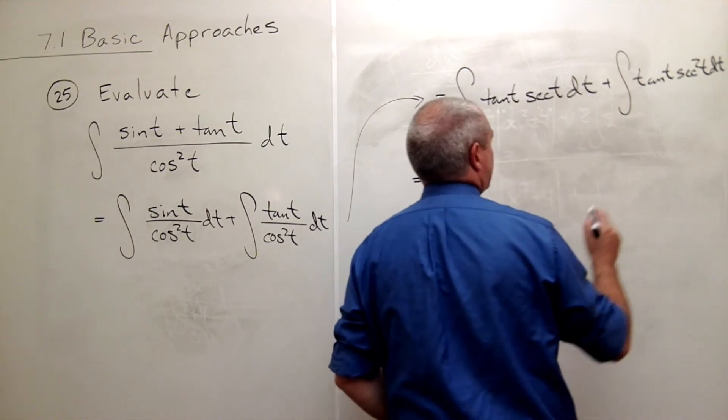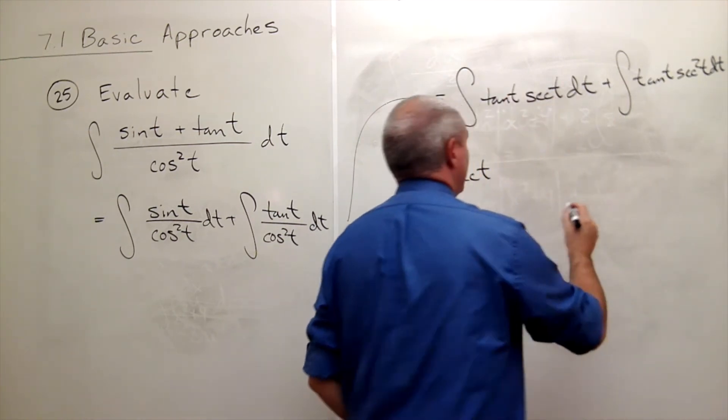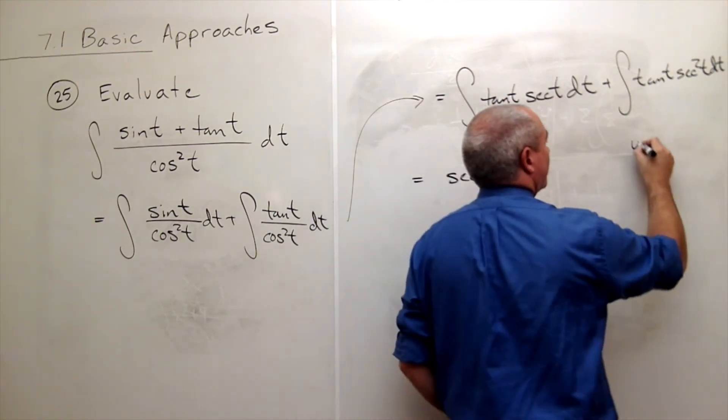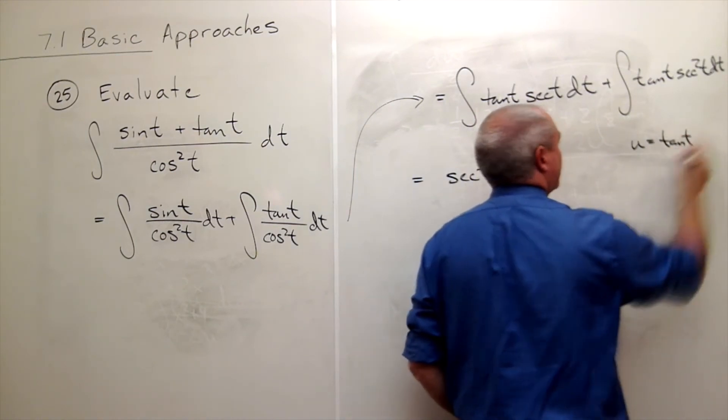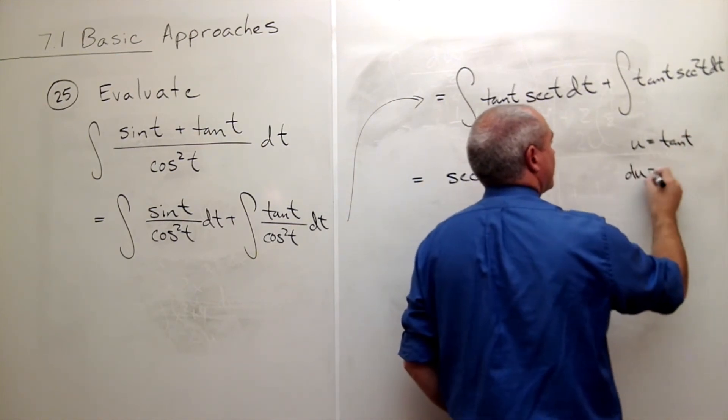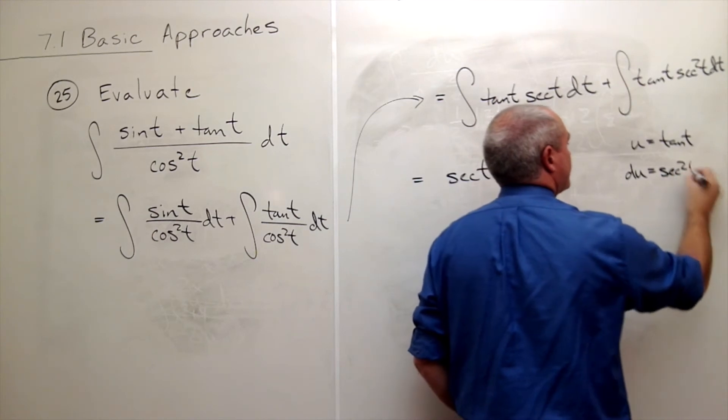So what I could do is let u be equal to tangent t. So du is secant squared t dt.